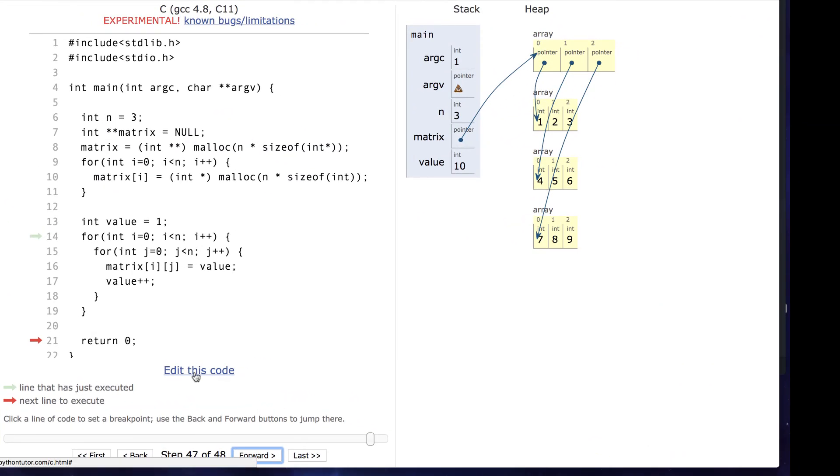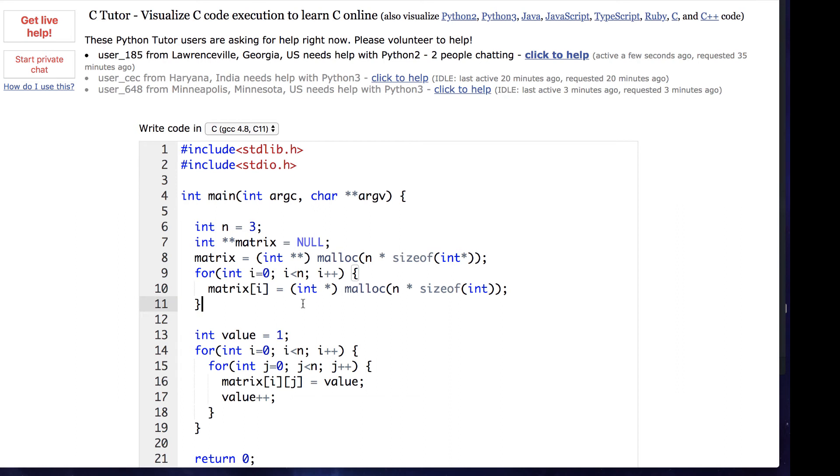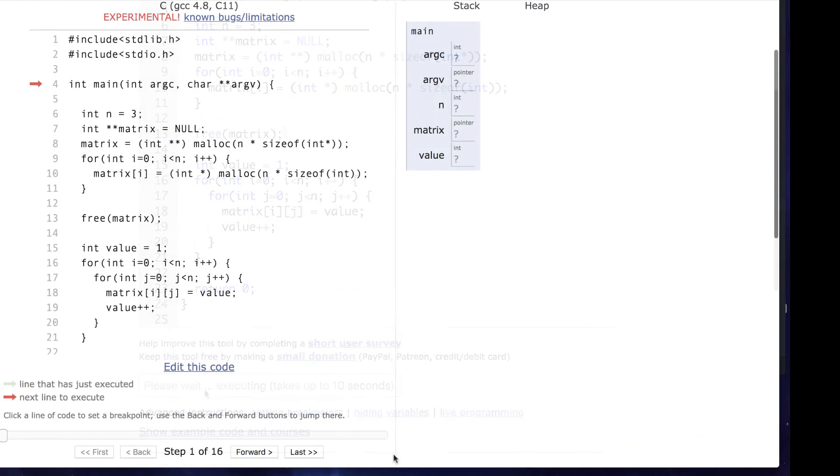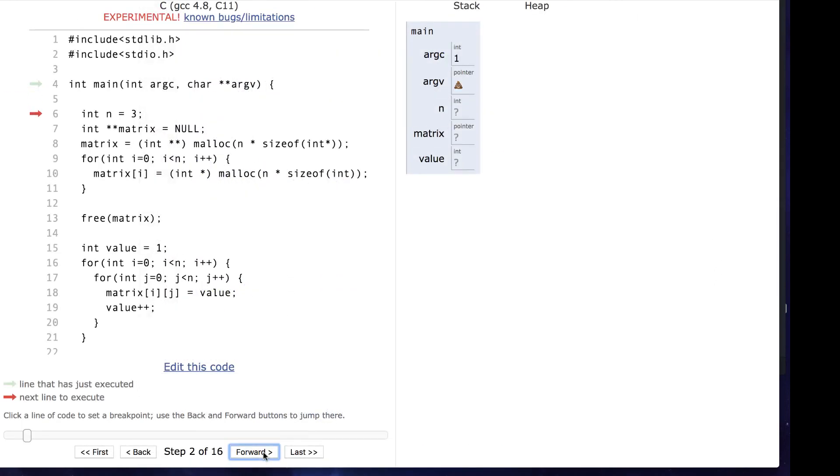Let's edit this code to free up the matrix improperly. Now, free matrix is going to free up the array of pointers. But the three rows of integers are now lost to us, causing a memory leak.